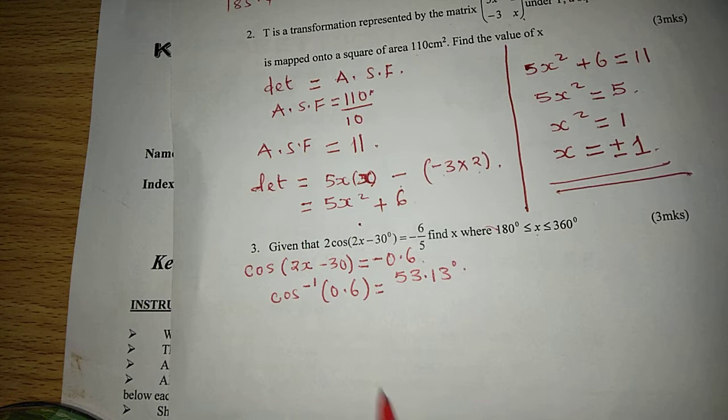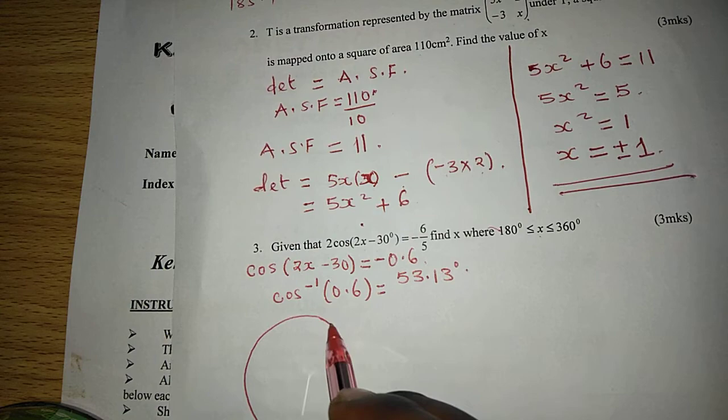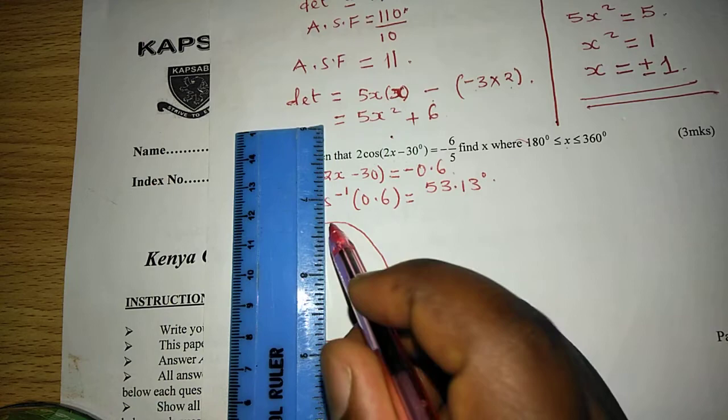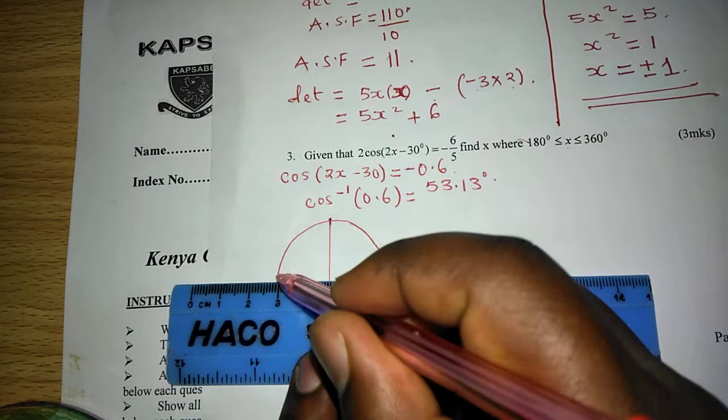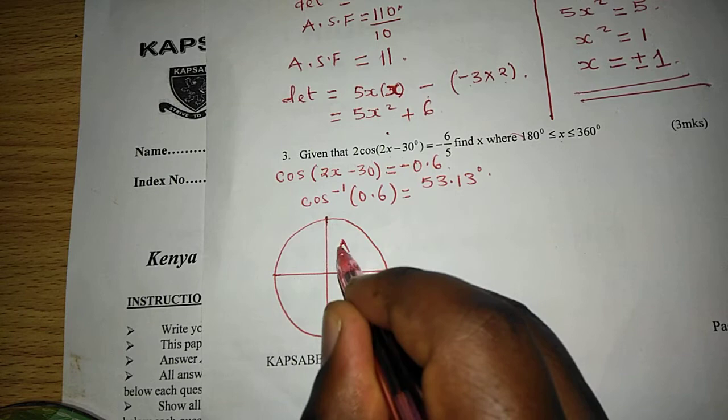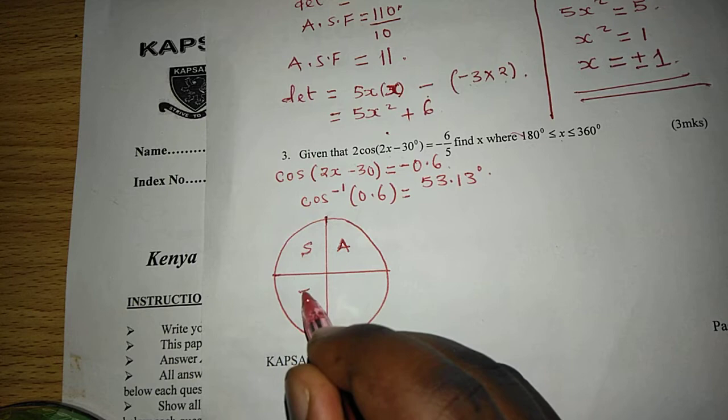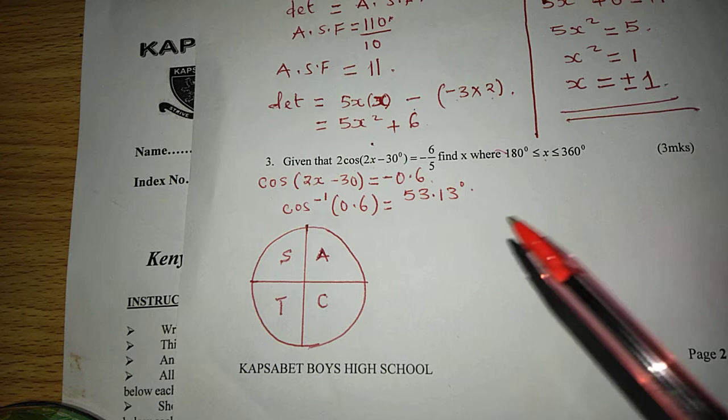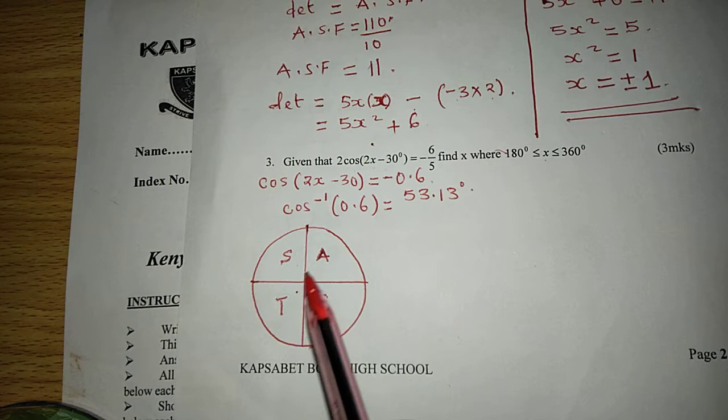So we can draw the unit circle first, together with the four quadrants, such that we can say that All, then Sine here, Tangent here, and Cosine there. Such that, because cosines are negative in the second and in the third quadrant, then we want this acute angle in those quadrants.